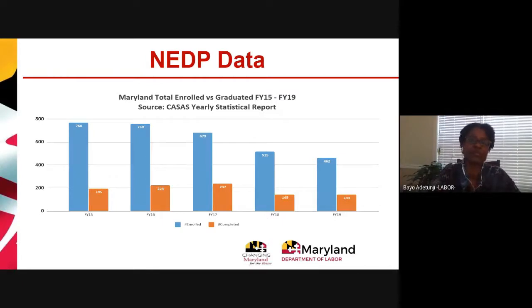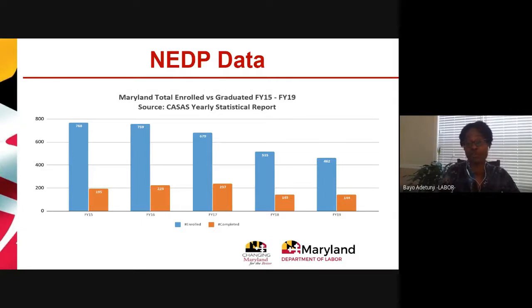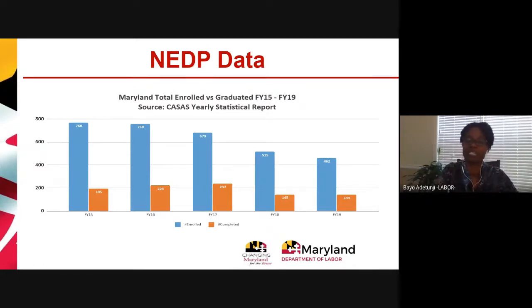This slide shows historical data in terms of enrollment versus graduation. There is a slight decline — enrollment went up in FY16 and then started going down. Diploma attainment went up in FY17 and then started declining, stabilizing in FY19.